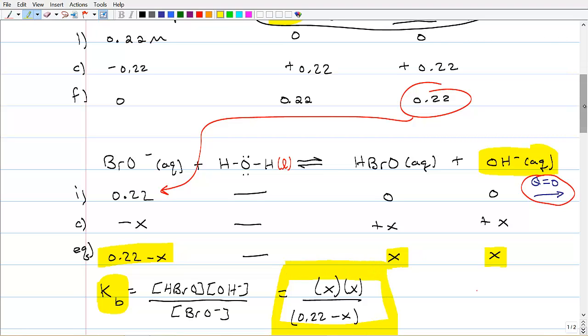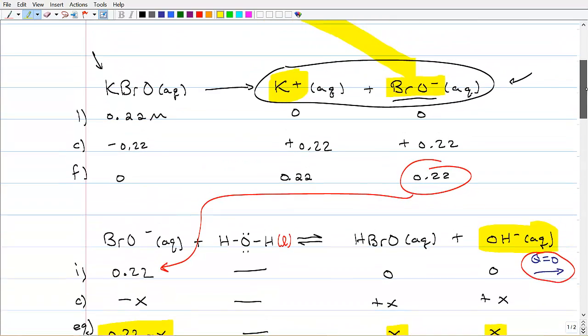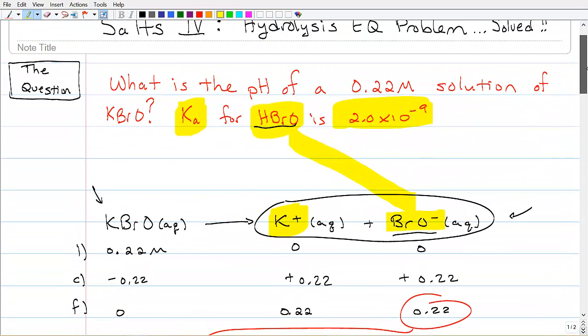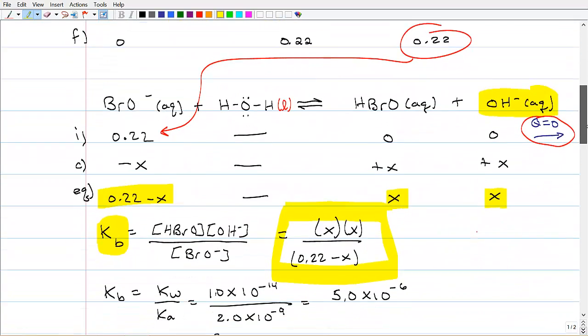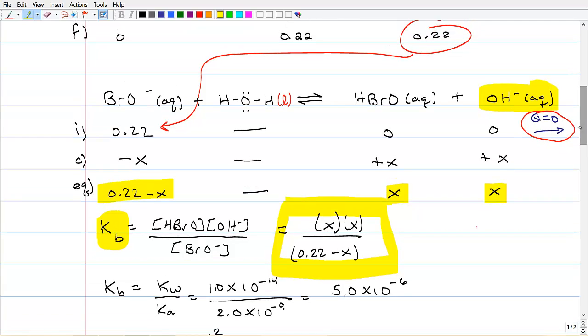So we don't have Kb though. If I scroll back up, we've got Ka right here. So if we've got Ka, we need to calculate Kb, and there's how we go ahead and do it. Kb is equal to Kw divided by Ka. We found that out in the last video. And voila, it's equal to 5.0 times 10 to the minus 6th.